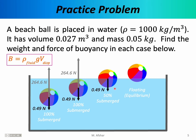In scenario three, weight is again 0.49 newtons. But the buoyant force is less this time because only half of the beach ball is underwater, so the displaced fluid volume is now only half of the total volume of the beach ball. Substituting half of 0.027 cubic meters into the buoyancy equation, the buoyant force is 132.3 newtons upward. The beach ball is still not in equilibrium and will continue accelerating upward.